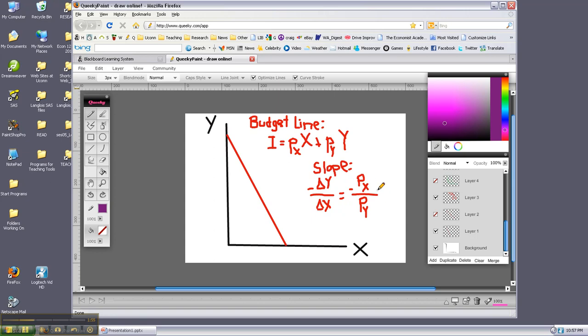And then for the budget line, it's going to be the price ratio, minus PX over PY. So take note, PX over PY is the slope, which is Y over X.